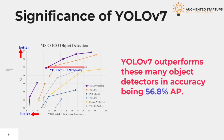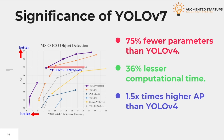YOLO V7 has the highest accuracy — 56.8% AP — among all real-time object detectors with 30 FPS or higher, where AP refers to average precision. YOLO V7 outperforms YOLO R, YOLO X, scaled YOLO V4, YOLO V5, and many more object detectors in terms of speed and accuracy. Both YOLO V4 and V7 use the Bag of Freebies model. However, YOLO V7 has 75% fewer parameters compared to YOLO V4, meaning less size and space, making it run more efficiently. This also means 36% less computational time, and the average precision of YOLO V7 is 1.5 times higher than YOLO V4, making it a better alternative than its predecessors.